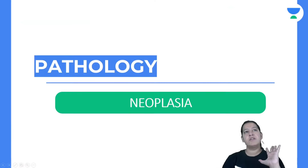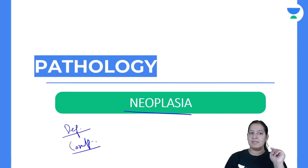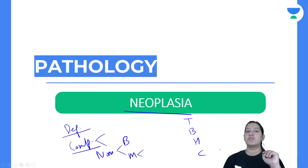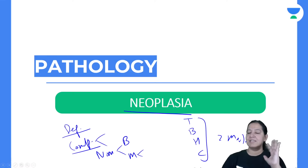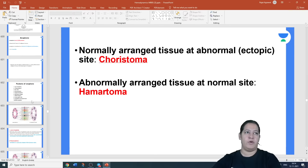Let me continue with neoplasia in general pathology. You already know the definition, the parenchymal and stromal components, the nomenclature — suffix '-oma' for benign, '-sarcoma' or '-carcinoma' for malignant — and the special categories like teratoma, blastoma, hamartoma, and choristoma. We had also started the characteristic features differentiating benign and malignant tumors.